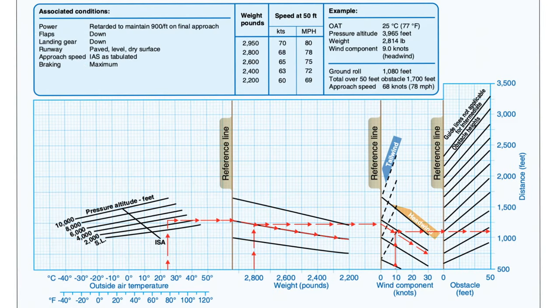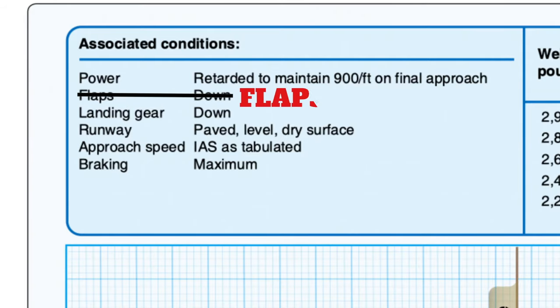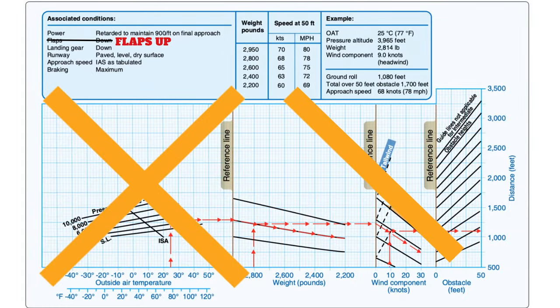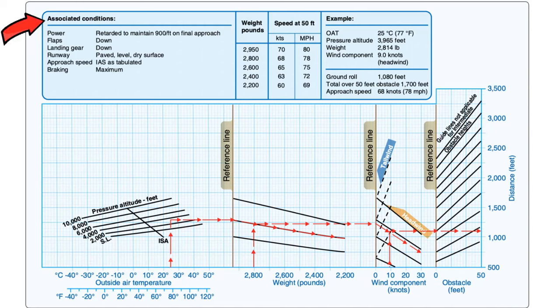Another spaghetti chart — the FAA wants to know for sure that you know how to use one of these, but it works just like the takeoff chart. Notice that just like the takeoff chart, there are some conditions we need to meet if we want accurate numbers. They're assuming that you're going to be carrying some power down final and that you're going to have all your flaps down. If you land with flaps up, you're completely invalidating your landing data and the runway length you calculate won't be correct. That's why it's so important to follow these conditions very carefully, especially when we know that landing distance is a factor.